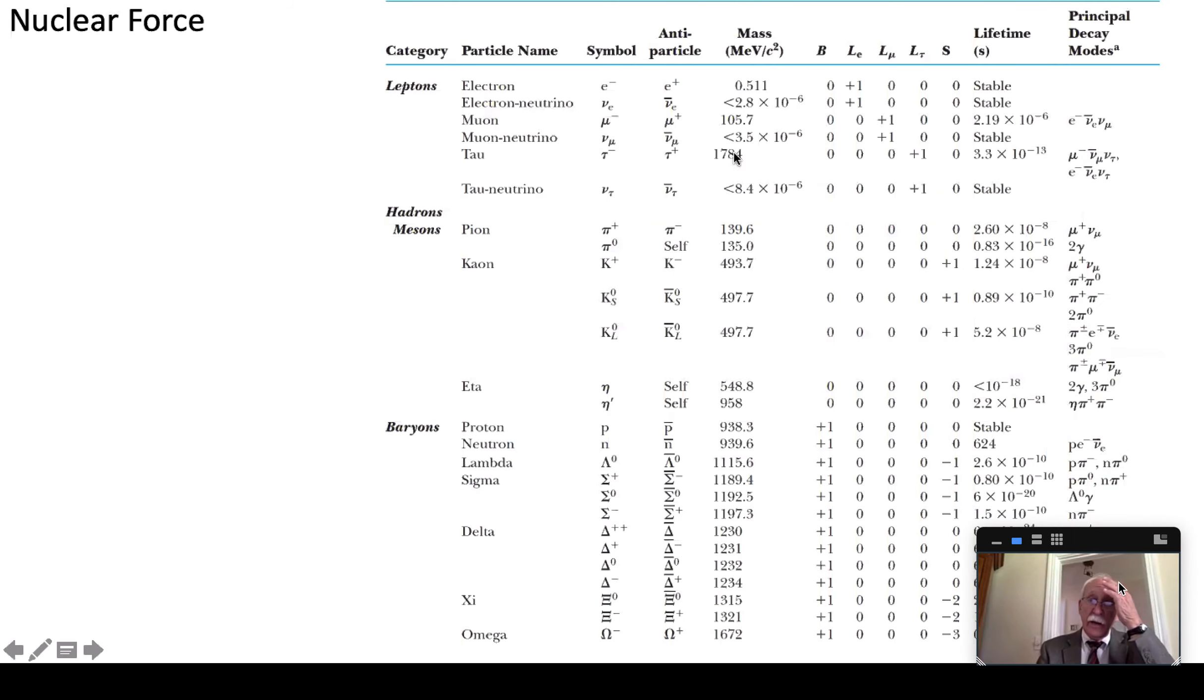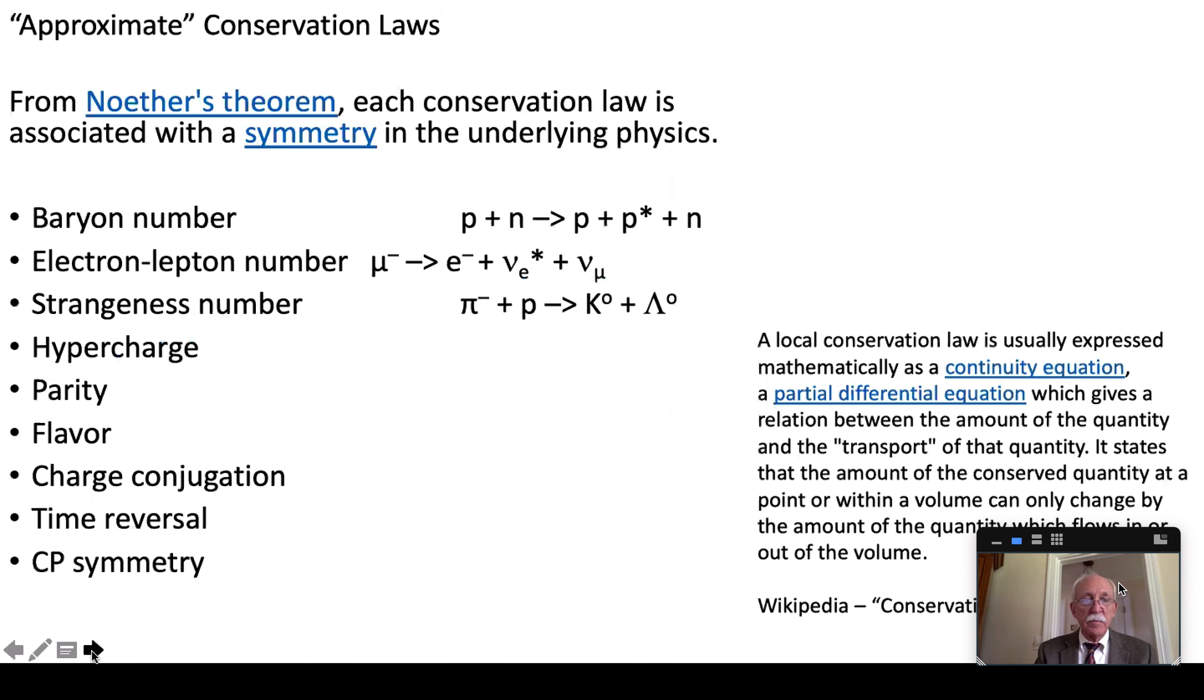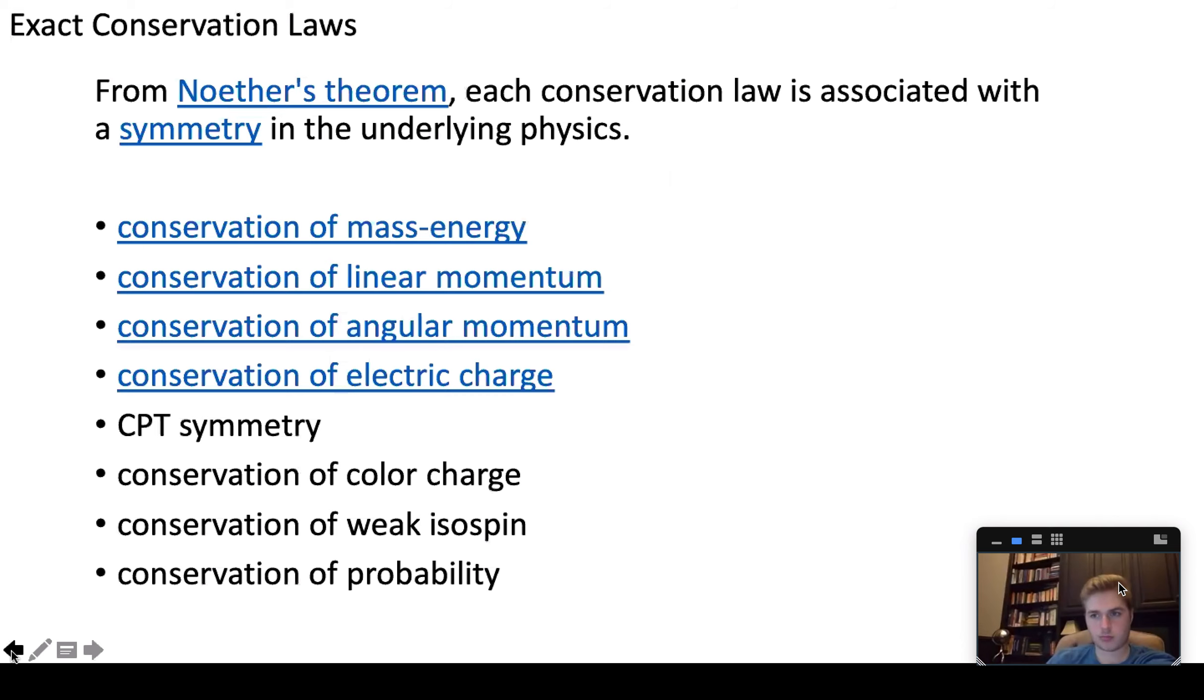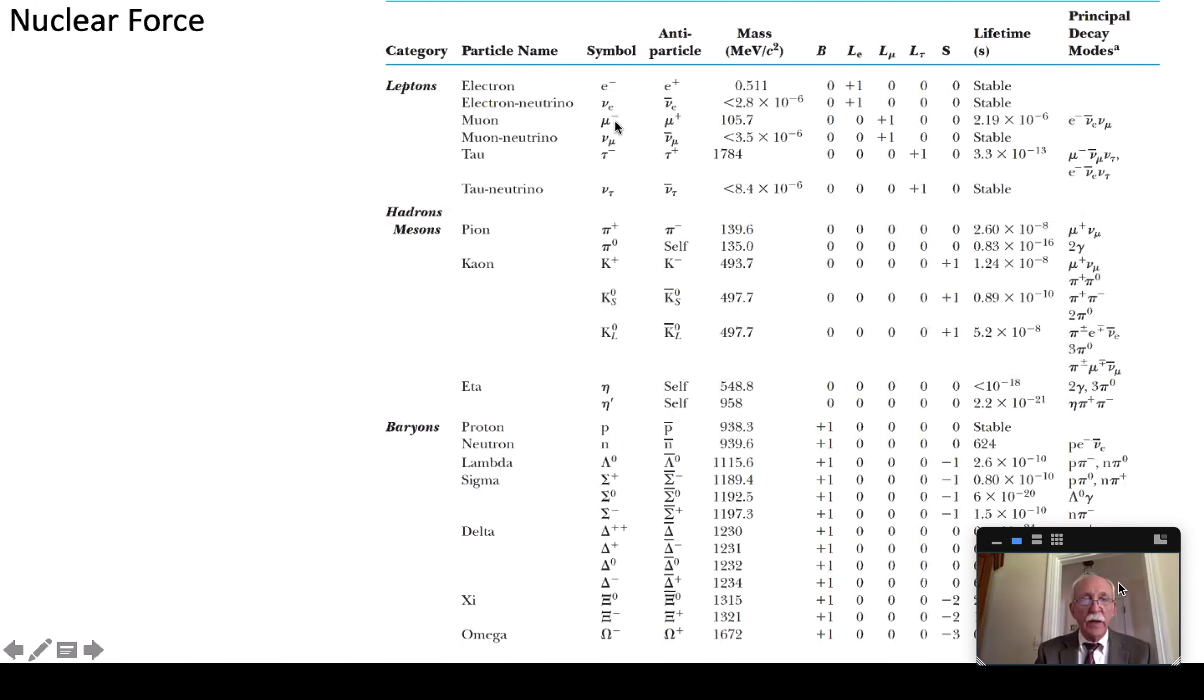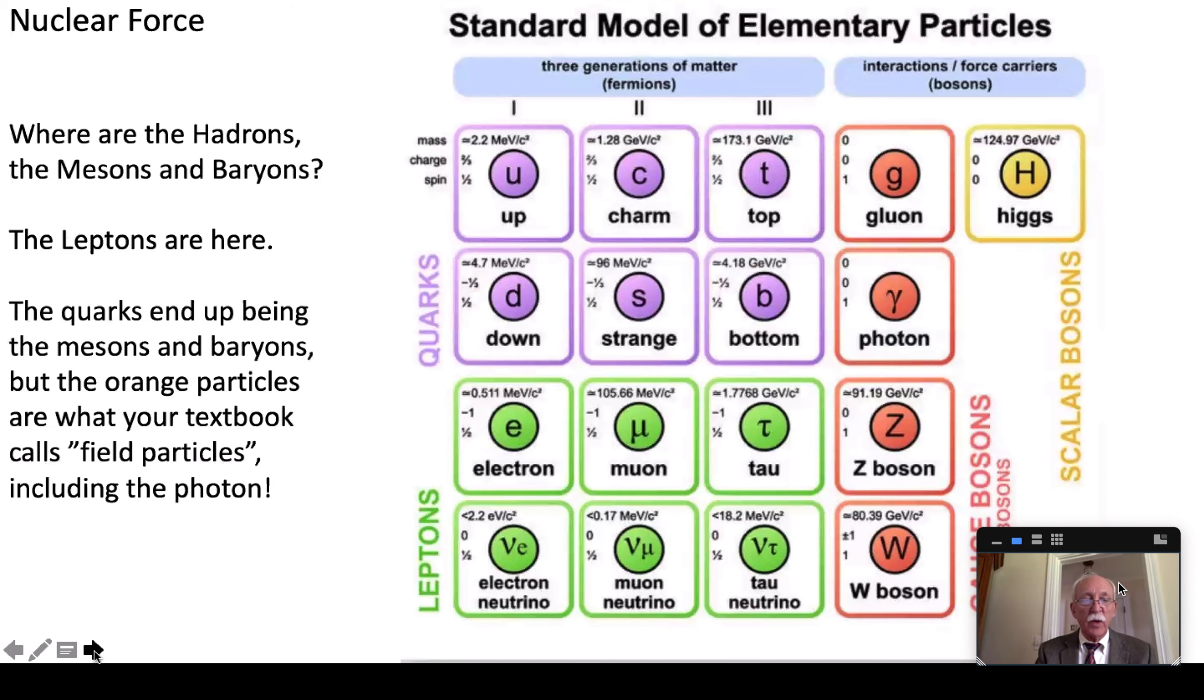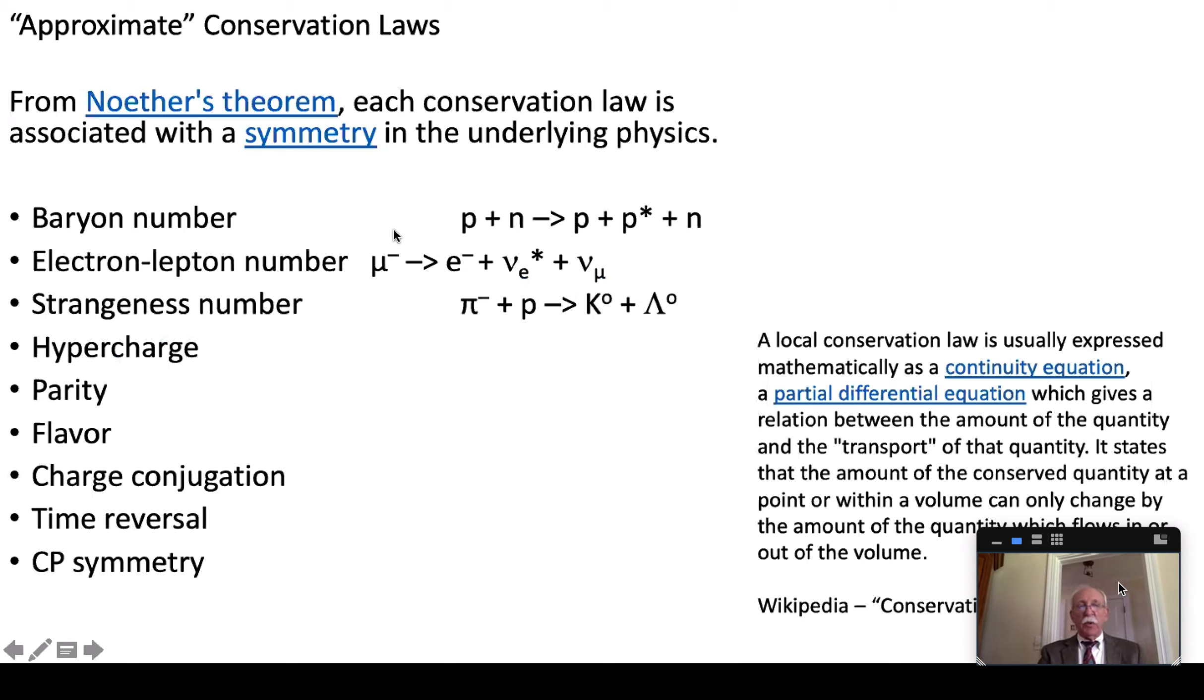So what have we got here for the electron and the electron lepton number is plus one even though it's minus. And the neutrino number is plus one and the muon has pluses. So they're all negative two aren't they when they have plus one.